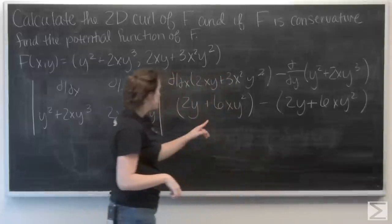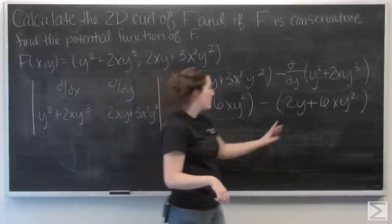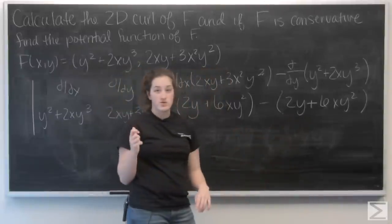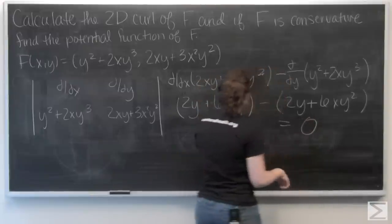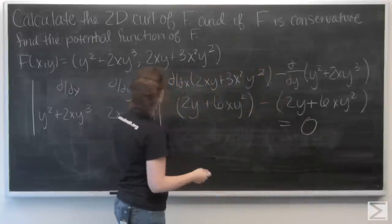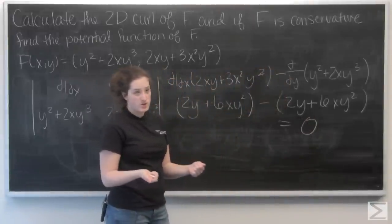So when I go to subtract these, I see that I actually have the same term both places. So my two-dimensional curl is going to be 0. And that tells me that f is conservative. So now I want to find its potential function.